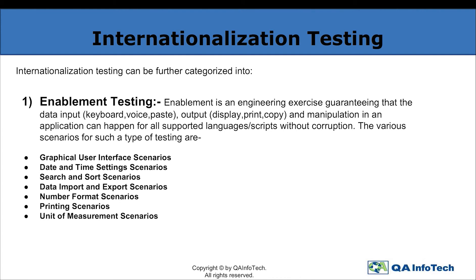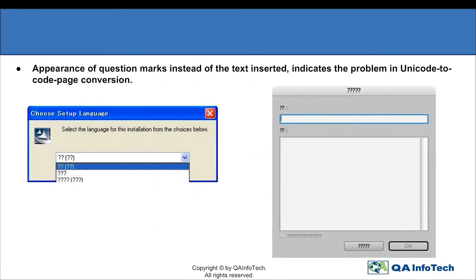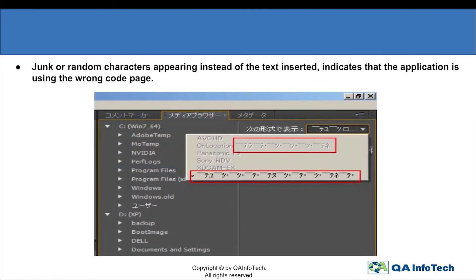to make sure that the application handles all types of localized characters without any corruption. A number of scenarios are covered under enablement testing, whether related to the GUI, data import and export, units of measurements, etc. For example, enablement testing is performed to check the question marks and boxes that appear instead of localized characters due to font rendering. Another example is when question marks appear instead of localized characters due to a problem in Unicode to code page conversion. Sometimes junk characters may even appear instead of actual localized characters due to the use of a wrong code page.